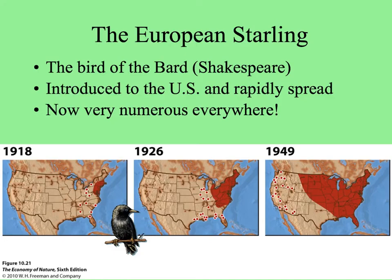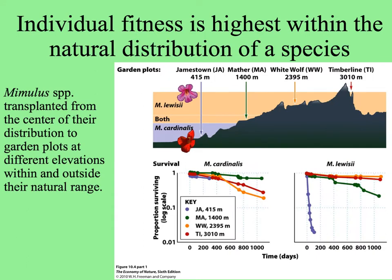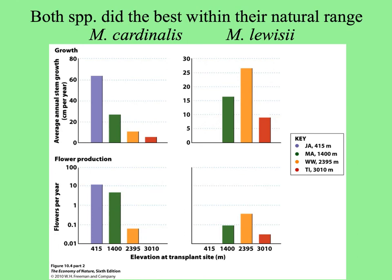In general, a species' fitness is highest within its natural distribution. And for most species, especially those without pest potential, experiments show that when you move them to other places nearby — at different elevations, for example — for these species of Mimulus, they do the best in their own range. These are data from transplanting Mimulus cardinalis and Mimulus lewisii to places at different elevations. For all parameters measured, they flowered most and best within their natural range.